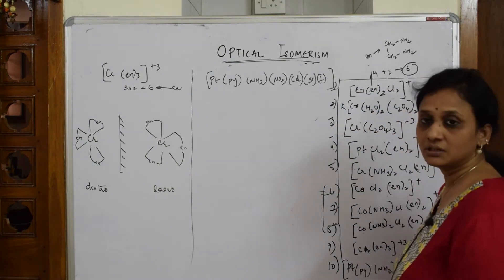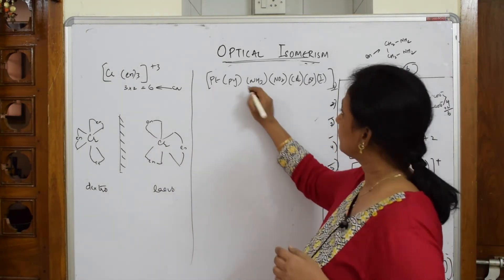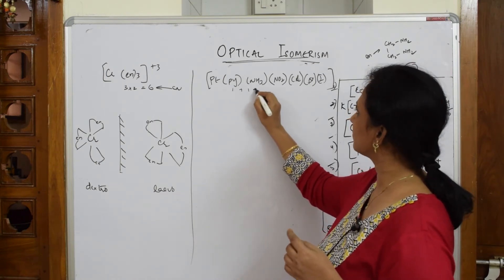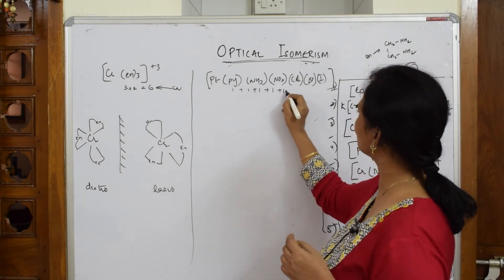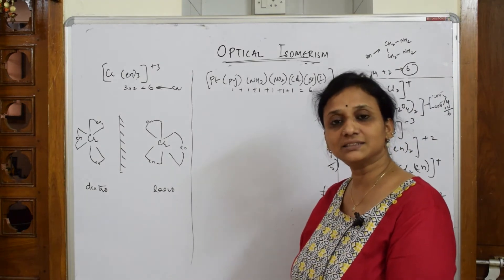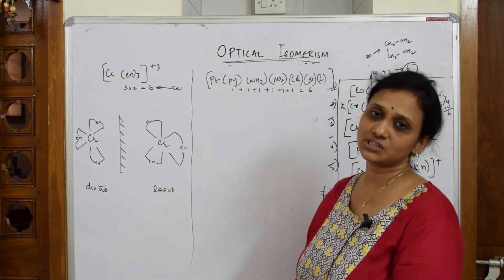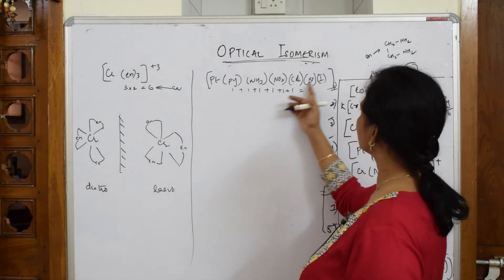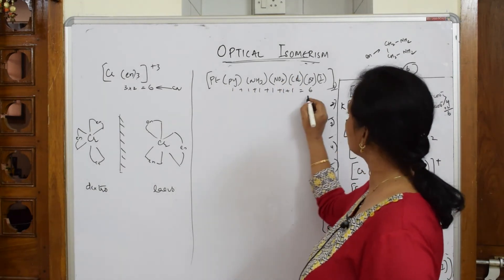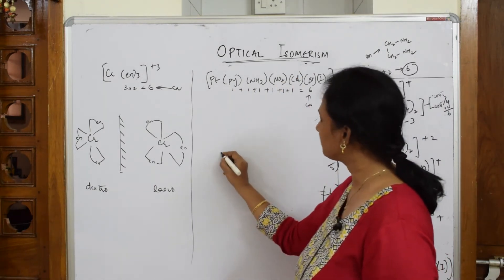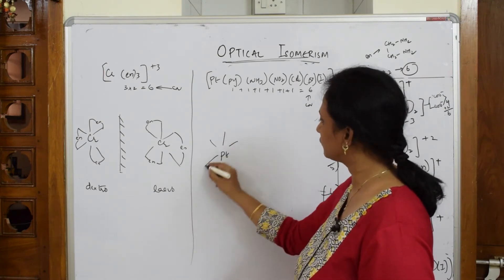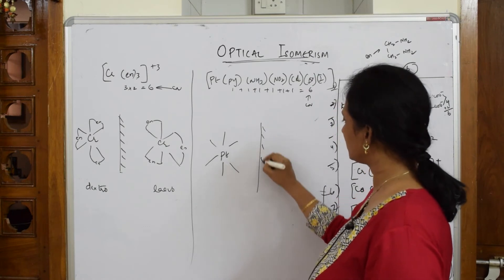Now let's start the second example. Observe carefully — what is the coordination number here? One plus one plus one plus one plus one plus one, so total is six. The number of ligands surrounding the metal atom is the coordination number, and there are six ligands around the central atom. So the coordination number is six. I can comfortably draw the complex with positions one, two, three, four, five, six, and then draw the mirror image.